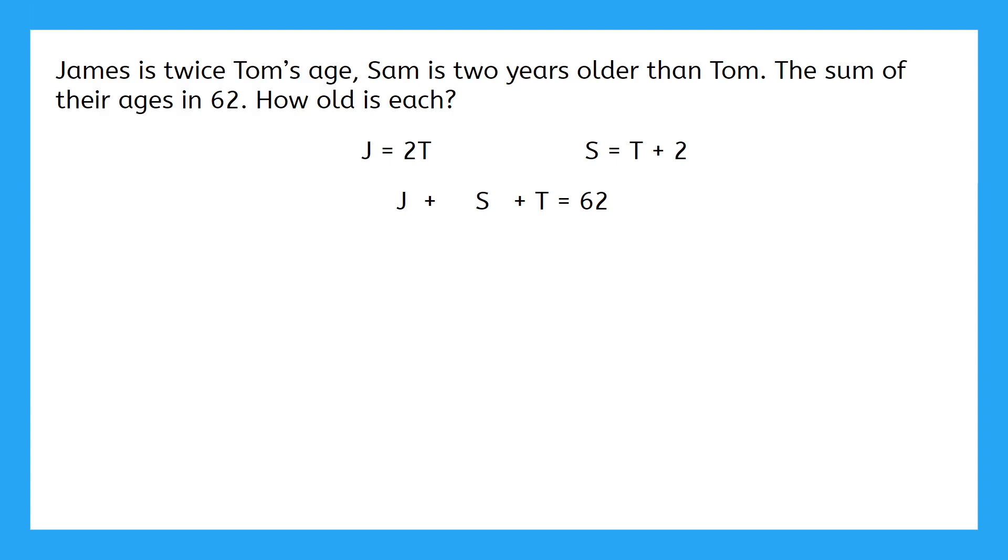So, we can't solve this with three different variables, but what if we replace James's age with twice Tom's age, and replace Sam's age with 2 years older than Tom? Now there's only one variable, and we can solve it. Now, we combine like terms, subtract 2, and divide by 4.